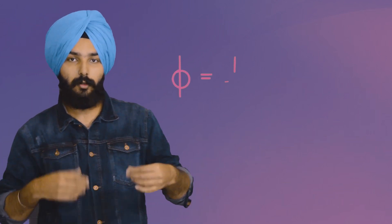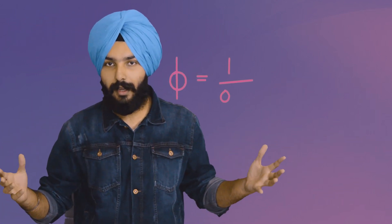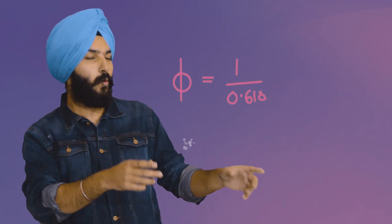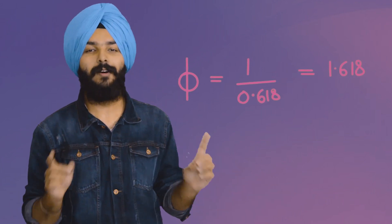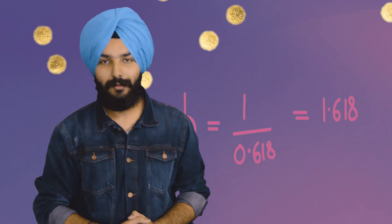Is there something special about this new rectangle too? Let's take the ratio of the longer side to the shorter side — and it comes out to be 1.618, which is the golden ratio.